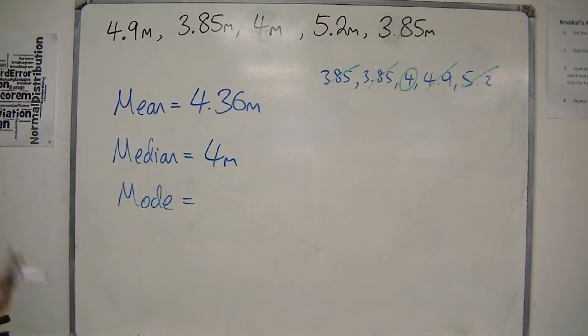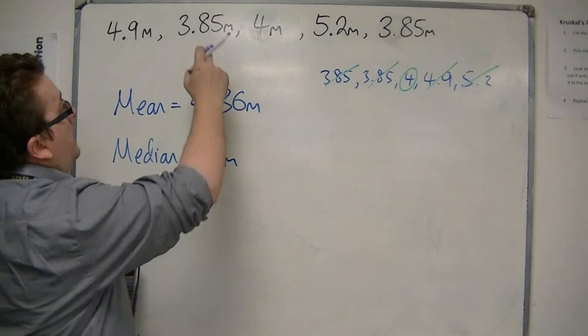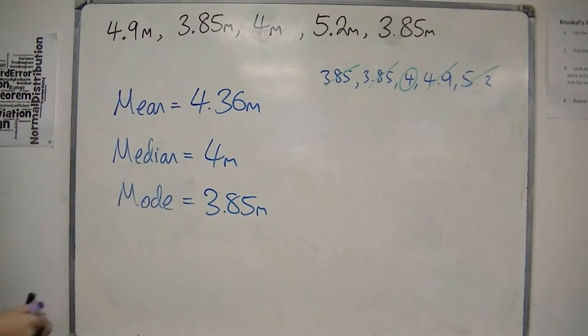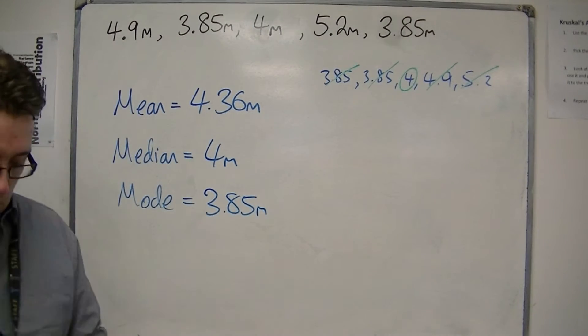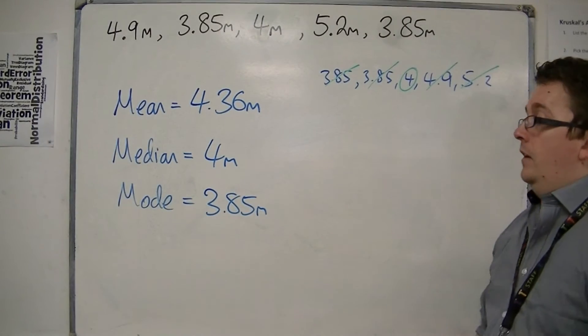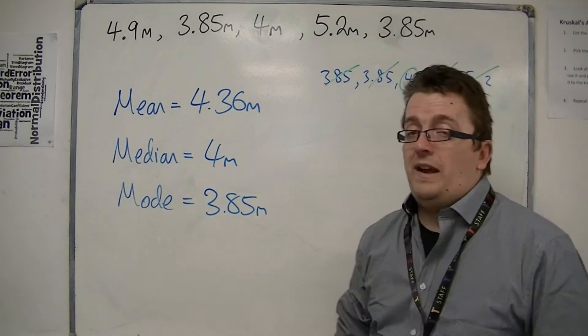And then the mode. Well, the most common number, there's two 3.85s, so that would be our mode. And really it's now determining which would be the best and most representative average here.